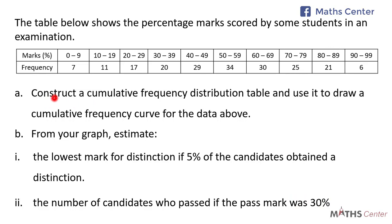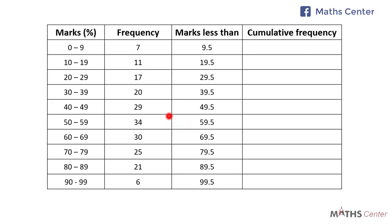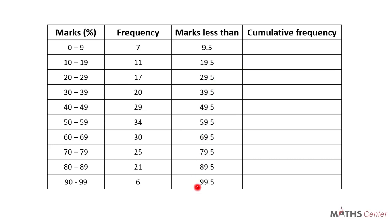Let's begin with the first part — constructing the cumulative frequency distribution table and using it to draw the cumulative frequency curve. As we learned from the previous video, a cumulative frequency distribution table will have four columns: marks, frequency, marks less than, and cumulative frequency. The marks less than values are the upper class boundaries of each class. The upper class boundary of 0 to 9 will be 9.5, that of 10 to 19 will be 19.5, that of 20 to 29 will be 29.5, and it continues for the remaining classes.